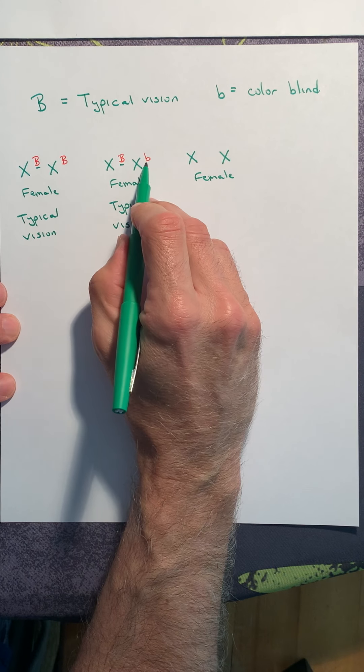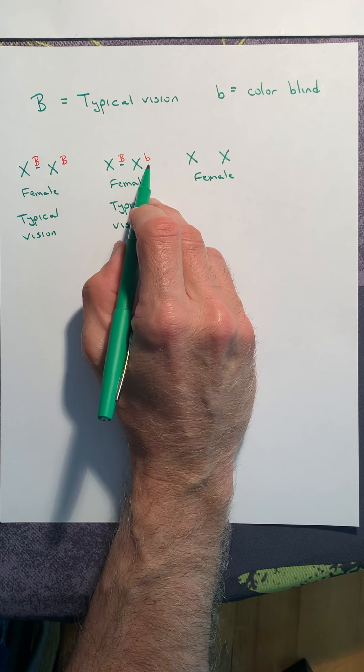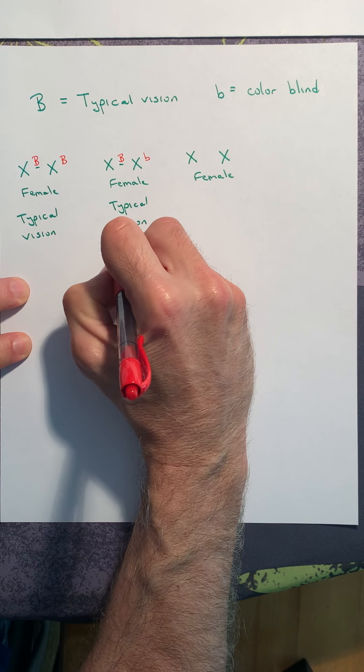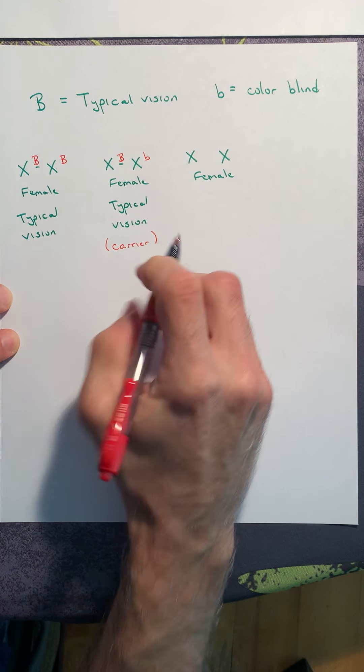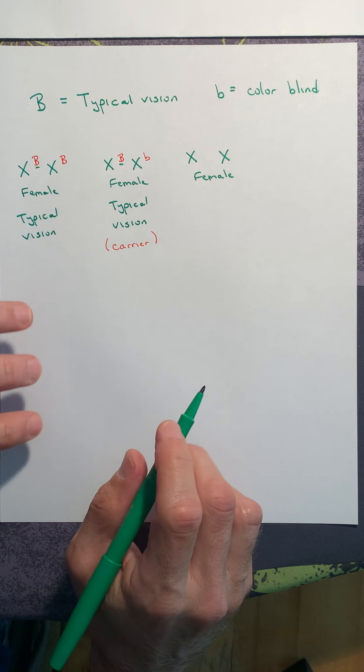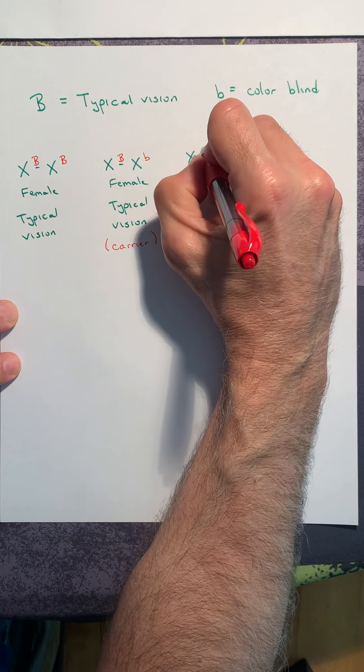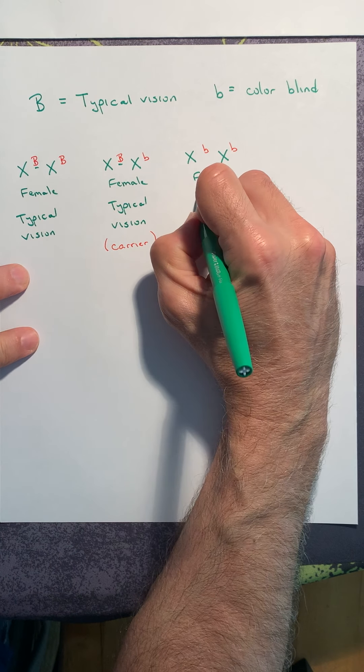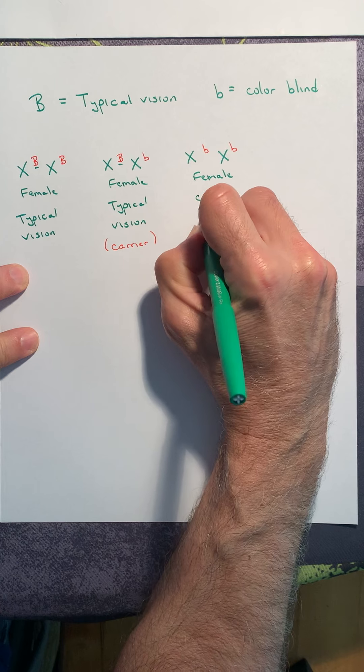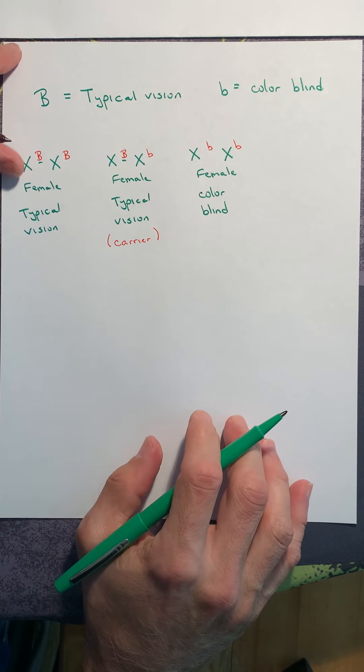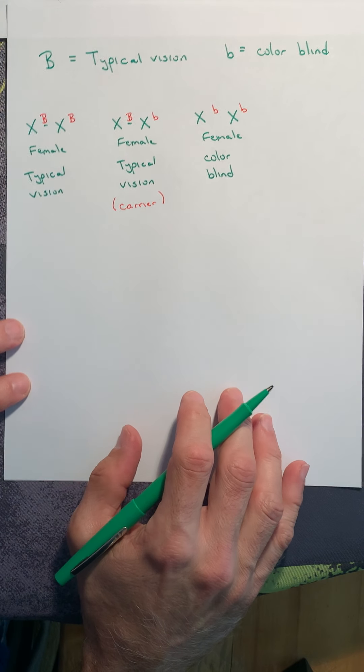However, could she pass this little B on to her offspring? Absolutely. Therefore, we call her a carrier. She still has typical vision, but she could give birth to a colorblind child. Or she could be X little B, X little B. Still female, but here, she's colorblind. So these are the three choices for a female.